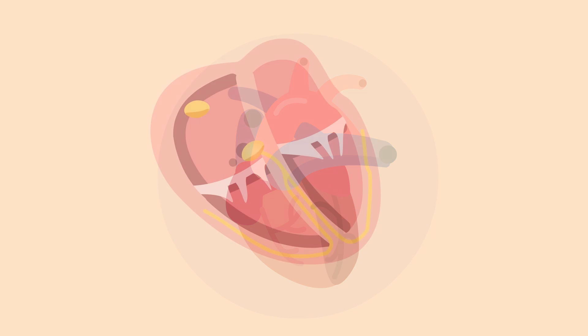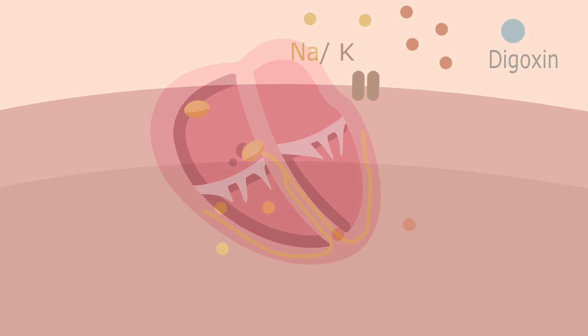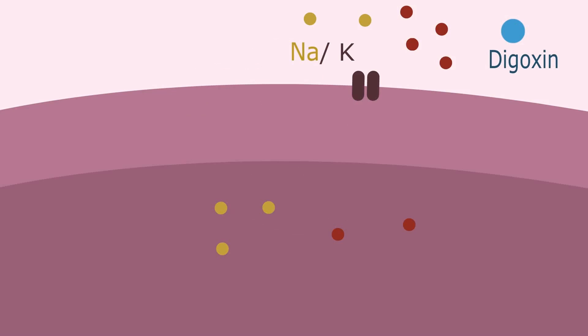It can also be used to treat some types of heart arrhythmias thanks to its ability to slow down the conduction of electrical signal in the heart. In this video we will take a closer look at exactly how the digoxin drug achieves this.